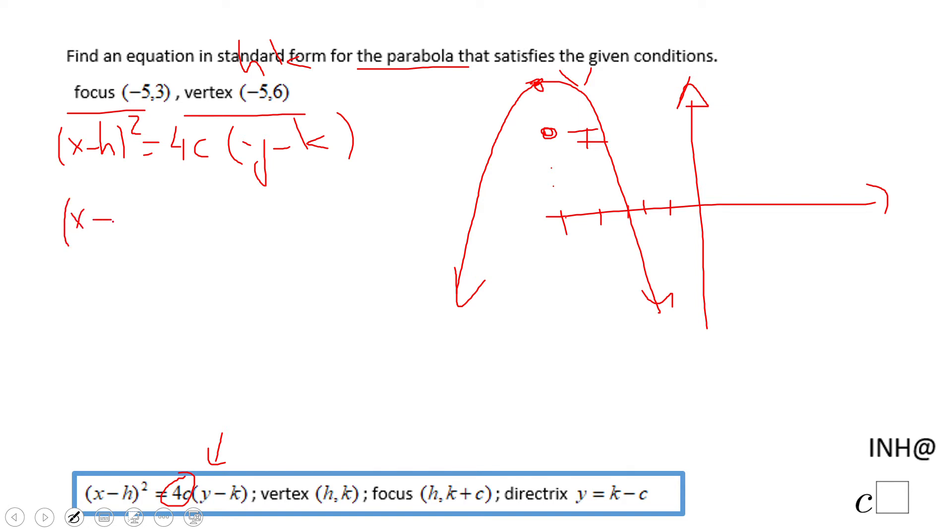This c here, from vertex to focus, is three units, right? So -4 times 3 times (y - k), which is (y - 6).